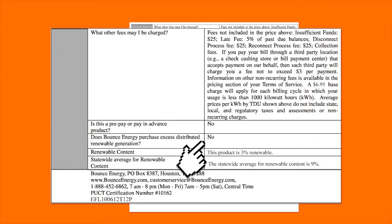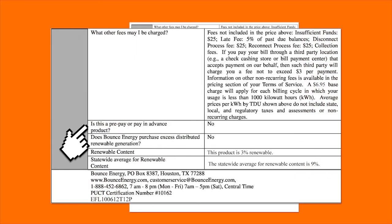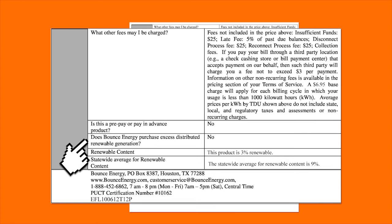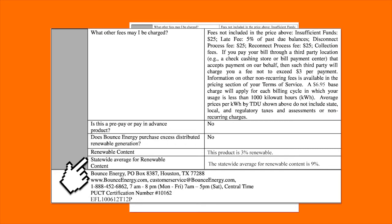The disclosure chart will also state whether the plan is a prepay or pay-in-advance plan, and whether or not the company sources distributed renewable energy content, showing the renewable content percentage for that particular plan compared to the statewide average.